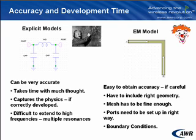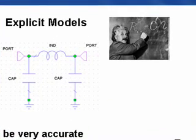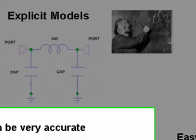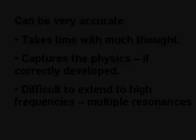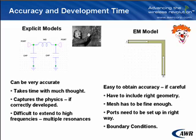With the explicit models, you really need some very bright person to develop these, and they do take time and thought. The major advantage is that if you can capture the physics, they can be highly predictive. For example, with the inductor here, it could model a bond wire or the length of your line, and you very easily know how to change the length of the line or the bond wire.